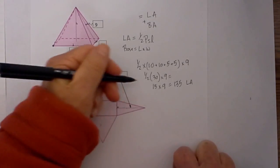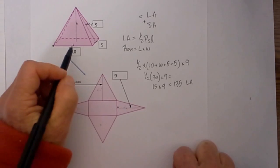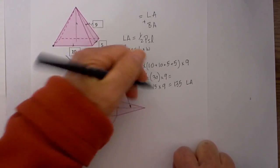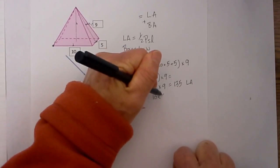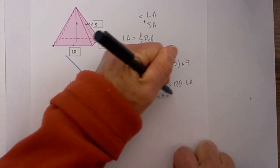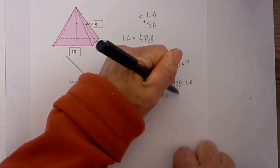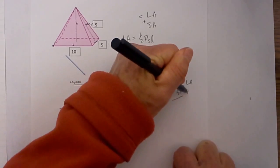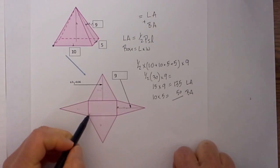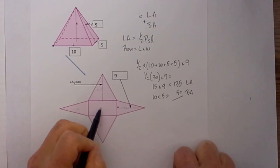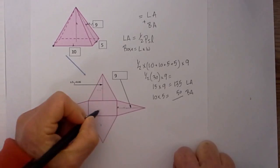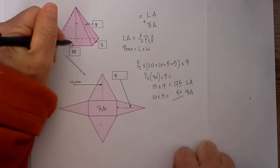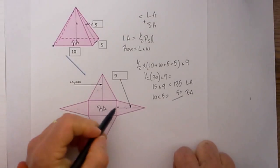Now all I have to do is calculate the base area. That will be 10 times 5, which equals 50. You can really see it here — this would be the base area right here.